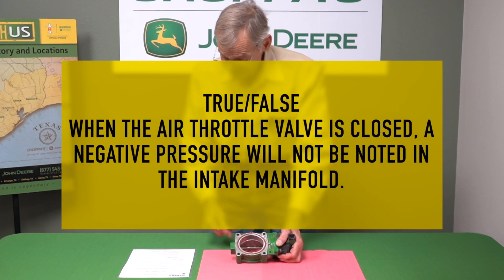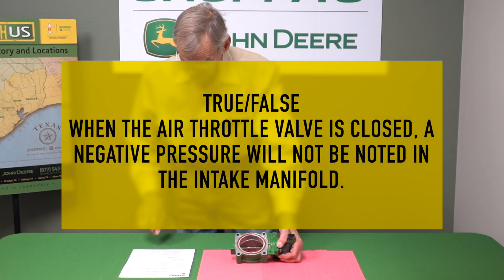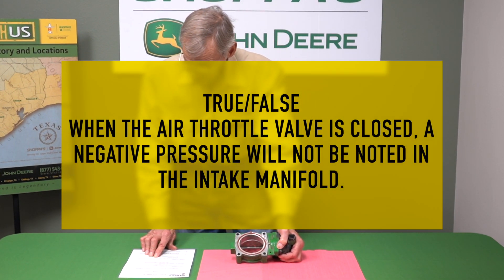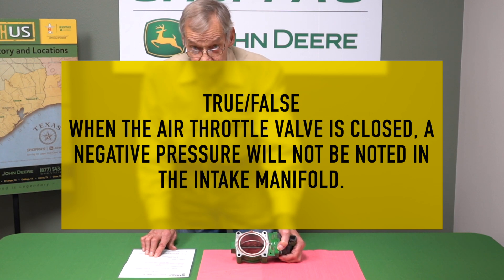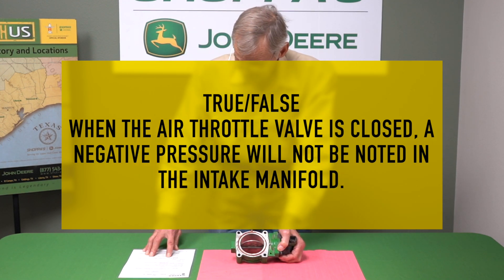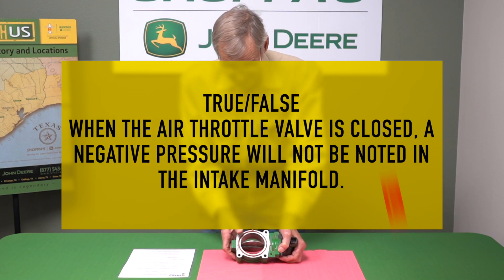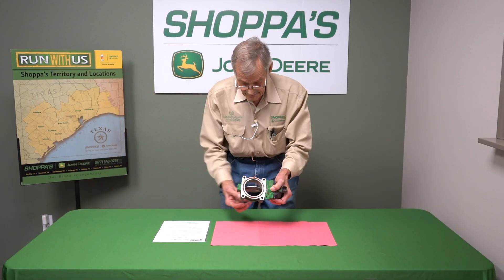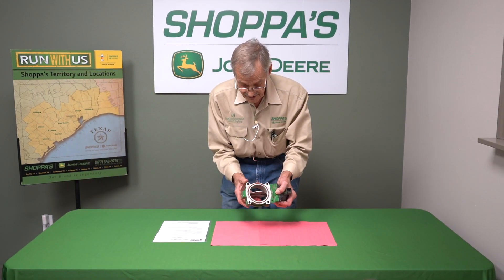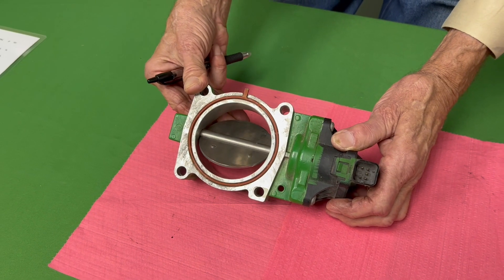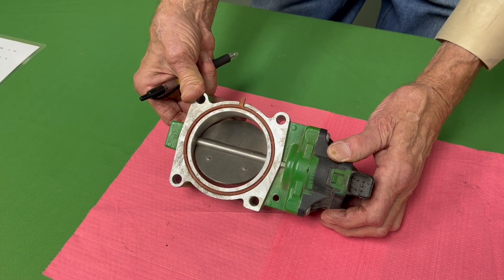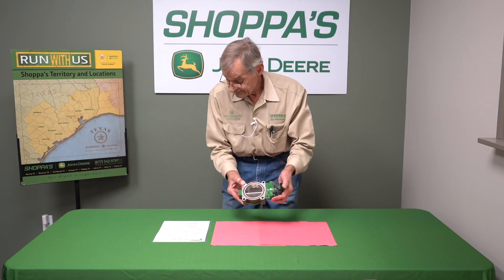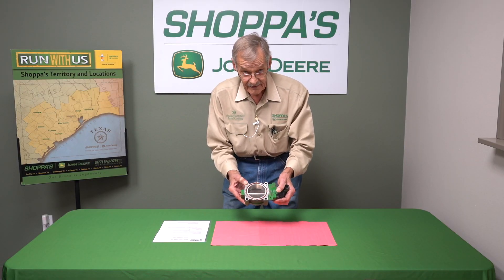The first statement is: when the air throttle valve is closed, a negative pressure will not be noted in the intake manifold. That's false. If your airflow is coming in this direction and it closes, it's going to cause an actual negative pressure or vacuum.